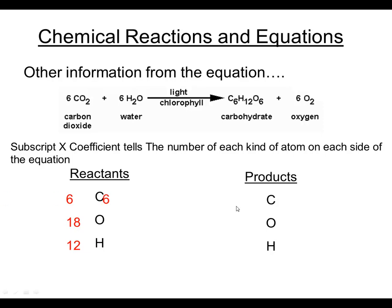On the product side, there are six carbon atoms in the one carbohydrate molecule. For oxygen, there are six oxygen atoms in the carbohydrate, and two atoms in each oxygen molecule times six molecules gives 12—so 18 total oxygen atoms in the products. And for hydrogen, there are 12 hydrogen atoms in the one carbohydrate molecule produced, so 12 total.